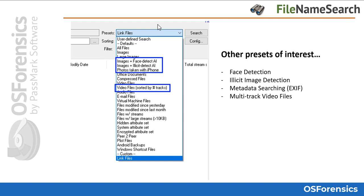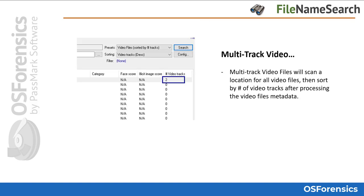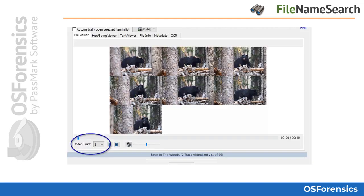Users can now tell on a live system or a disk image in a matter of just minutes whether any video file contains multiple tracks. And once located, OS Forensics can then view those additional tracks that are often missed by other tools. The multi-track video file scan will scan a location for all video files, then sort those returns by number of video tracks after processing the video files' metadata.